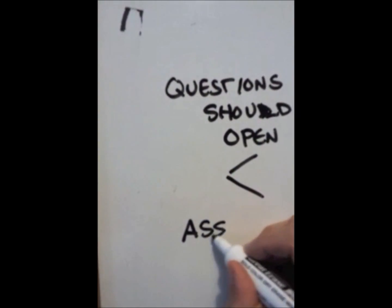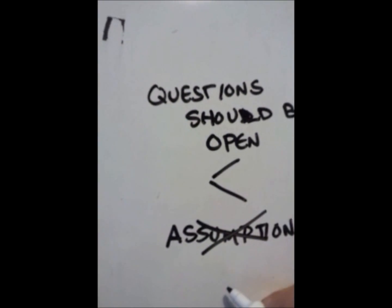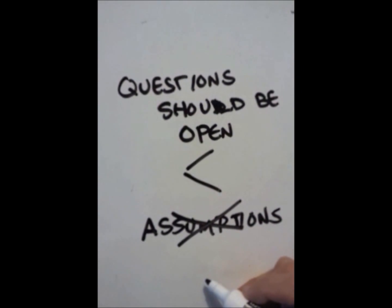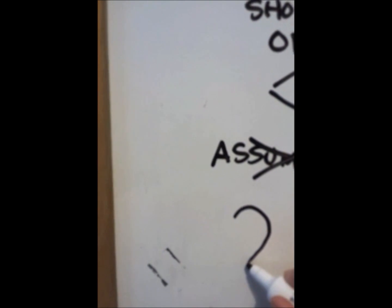Costakas lists two essential questions. One, what have you experienced in terms of the phenomenon? And two, what contexts or situations have typically influenced or affected your experiences of the phenomenon?